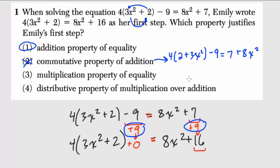The multiplication property of equality, that might mean we're multiplying something to both sides. So let's say I double both sides. Instead of 4 times 3x squared plus 2, I would have 8 groups of 3x squared plus 2. I double that.